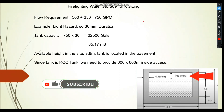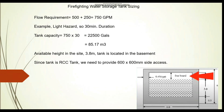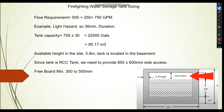Since the tank is an RCC tank, we need to provide a side access opening of 600 mm by 600 mm so that maintenance personnel can enter from outside. Some projects use 700 mm by 700 mm; in this example we use the minimum 600 by 600 mm. Additionally, we must account for freeboard — a zone kept free of water to accommodate float valves and other equipment — typically 300 to 500 mm. In this example we use 500 mm for freeboard.